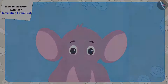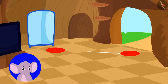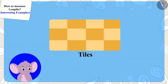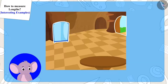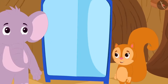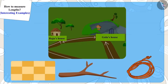Let us see what Appu says to Chanda. Appu said to Chanda that whenever she has to tell somebody the distance from one place to another, she can use the count of the tiles on the floor — like her TV is four tiles away from the table, and her blue cupboard is eight tiles away from the door.